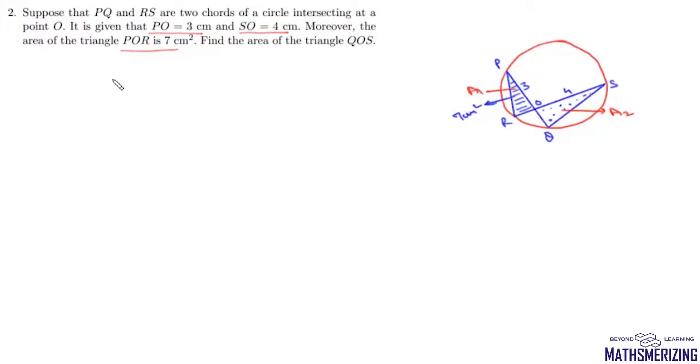Triangle POR is similar to triangle SOQ. Angles in the same segment are the same. So angle P is the same as angle S, and angle R is the same as angle Q. Therefore, these two triangles are similar.